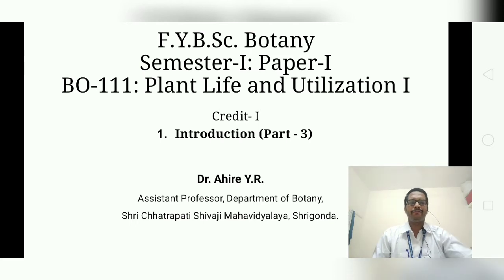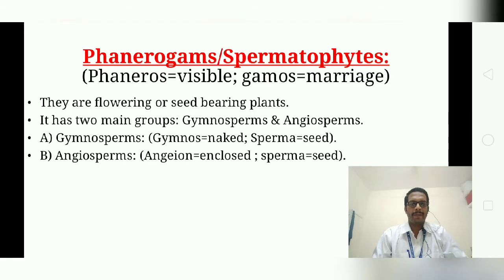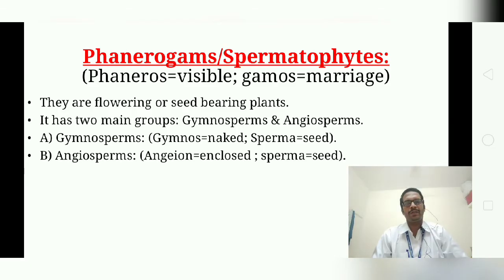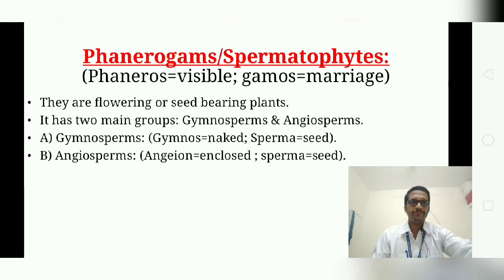Phanerogams are also known as Spermatophytes. 'Phanero' means visible and 'gamos' means marriage, so they are flowering or seed-bearing plants. They have two main groups: Gymnosperms and Angiosperms. 'Gymnos' means naked and 'sperma' means seed; 'angio' means enclosed and 'sperma' means seed — so naked seed versus enclosed seed.